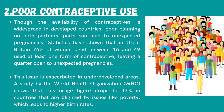Poor contraceptive use. Though the availability of contraceptives is widespread in developed countries, poor planning on both partners' parts can lead to unexpected pregnancies. Statistics have shown that in Great Britain, 76% of women aged between 16 and 49 used at least one form of contraceptive, leaving a quarter open to unexpected pregnancies. This issue is exacerbated in underdeveloped areas. A study by the World Health Organization shows that this usage figure drops to 43% in countries blighted by issues like poverty, which leads to higher birth rates.